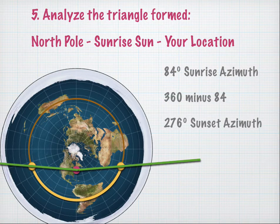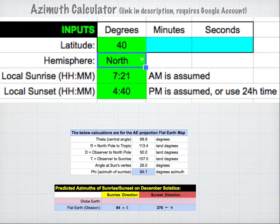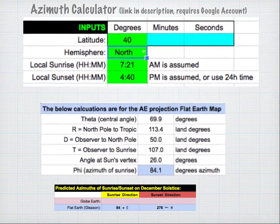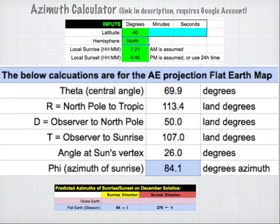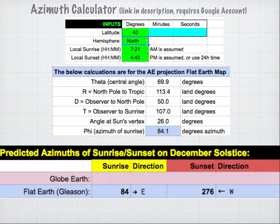There is a symmetrical measurement on the sunset side because sunrise and sunset are symmetrical. So we simply take 360 degrees and subtract 84 to get the sunset azimuth. These calculations might have seemed tedious, so I've made a calculator. All you need to do is put in your latitude in decimal degrees or degrees, minutes, and seconds, pick your hemisphere (north or south), and enter your sunrise and sunset times. The calculator does all the intermediate calculations. Finally we get phi — the angle of azimuth at sunrise — and then subtract phi from 360 to get the sunset azimuth. Those are the two azimuths for the flat Earth Gleason map.